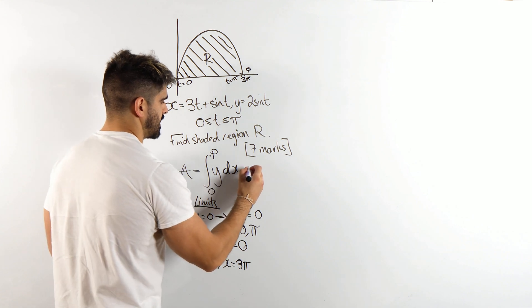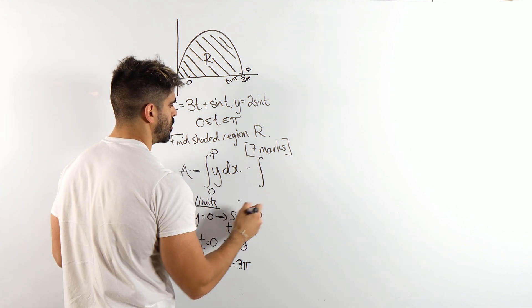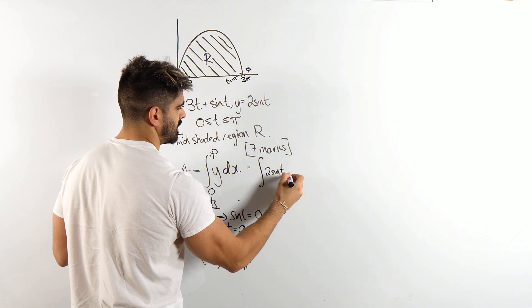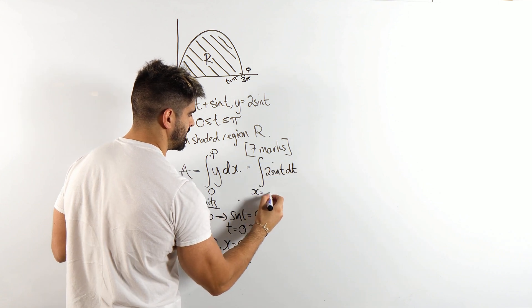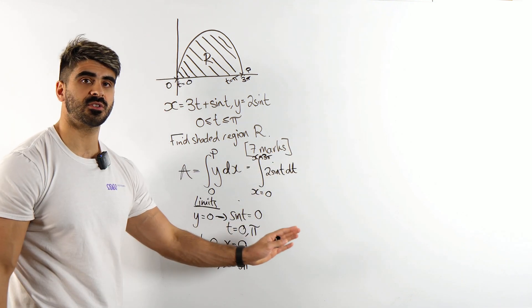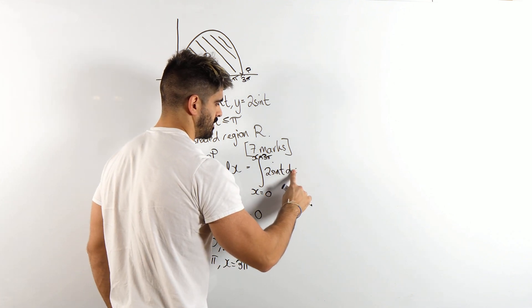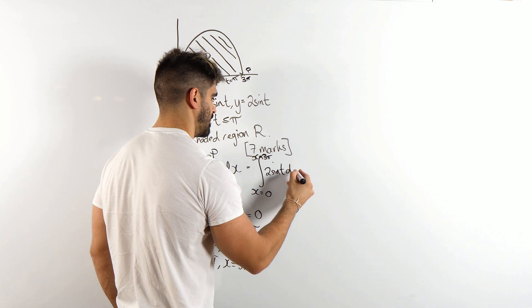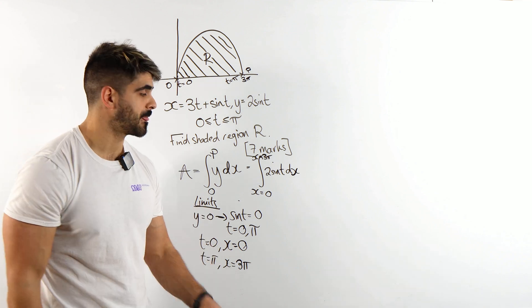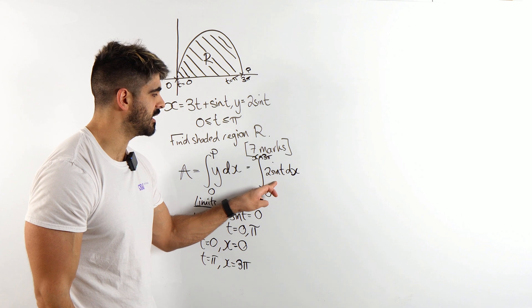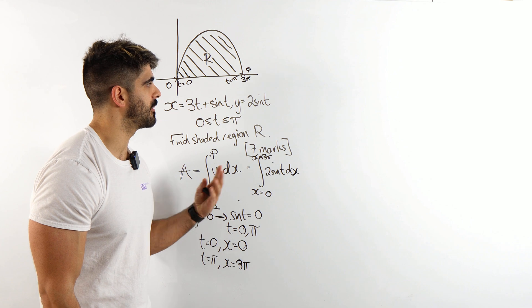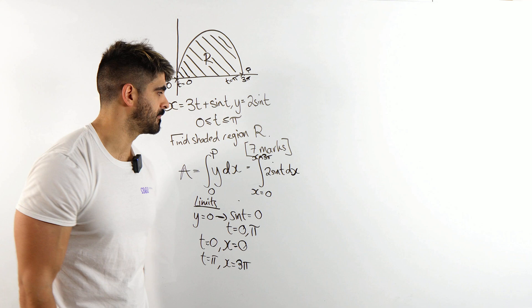So this integral looks like this. x is the integral of y, but y is 2 sine t between x is 0 and x is 3 pi. So that's the first thing we write down, and now, sorry that's not dt, that's dx. We're just copying over. I just replace what y is. Now we're like, okay, I cannot integrate a function of t with respect to x and with x limits. So now, we're going to start moving over to the t plane.